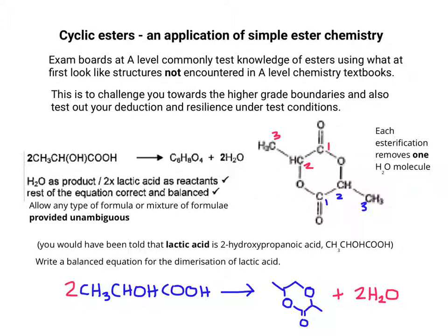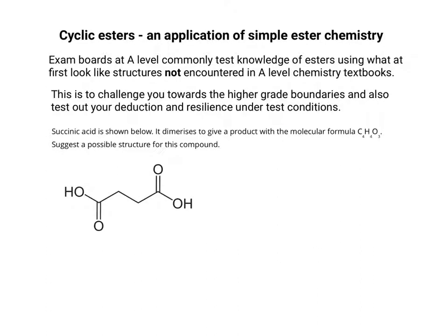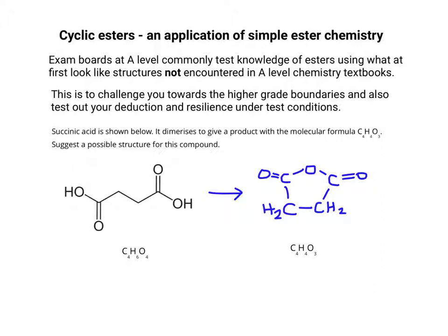Let's try one more before we finish up. This question is about something called succinic acid. Succinic acid will also dimerise just like lactic acid does, but it gives a product with the molecular formula C₄H₄O₃. The first thing to notice is it's not a hydroxycarboxylic acid like lactic acid — it's a dicarboxylic acid. The formula of succinic acid is C₄H₆O₄, so obviously what happens is you take away a water molecule, which gives you C₄H₄O₃ and H₂O.